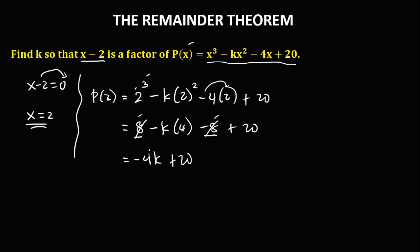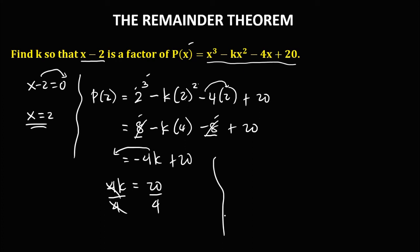Transpose negative 4k to the left side, so it becomes positive 4k equals 20. To solve for k, divide both sides by 4. Therefore k is equal to 20 divided by 4, which is positive 5.